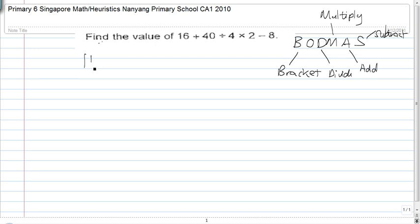So we've got 16 plus 40 divided by 4 times 2 minus 8. BODMAS tells us that we got to do this first.